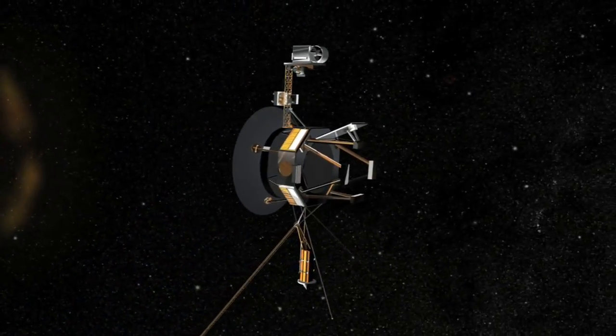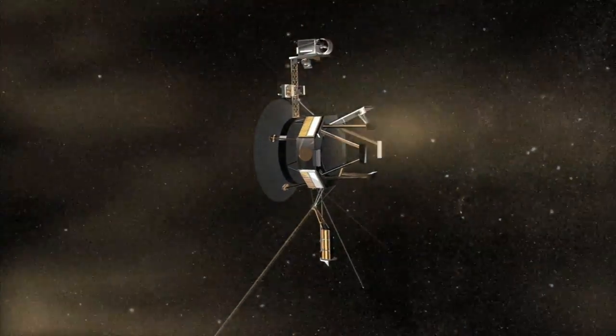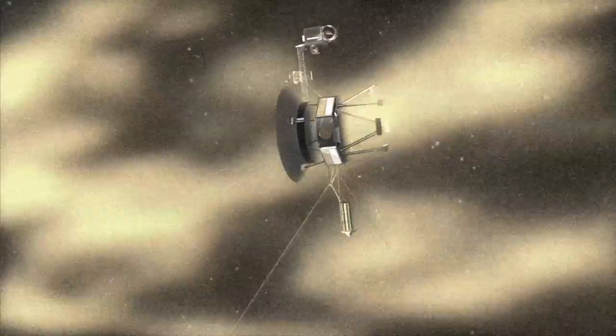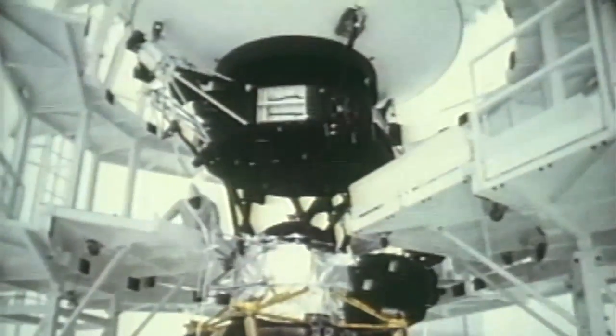As the Voyager spacecrafts near the edge of our sun's reach, scientists are getting a new look at the expanse and shape of the solar system.